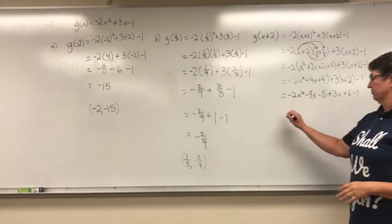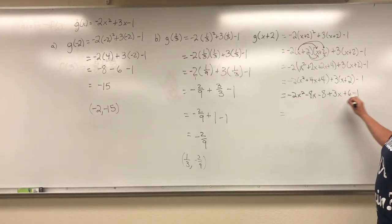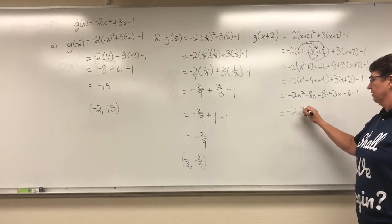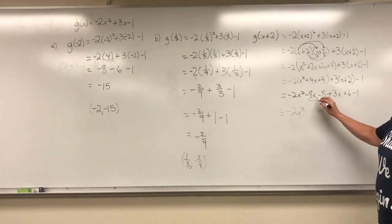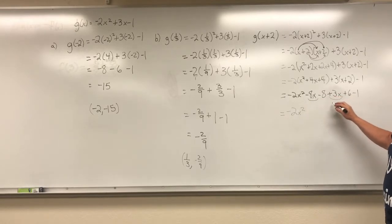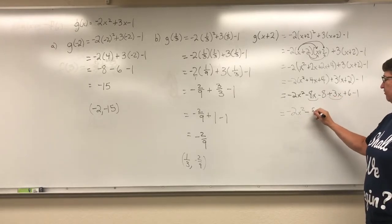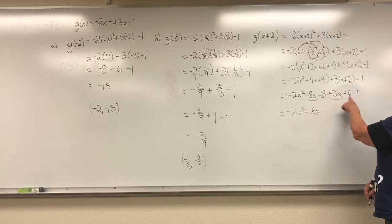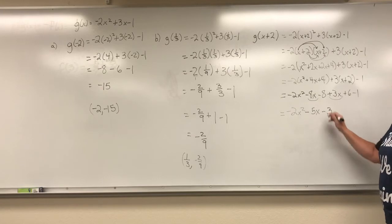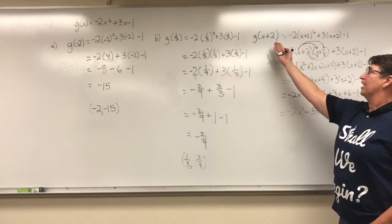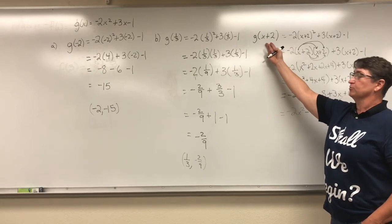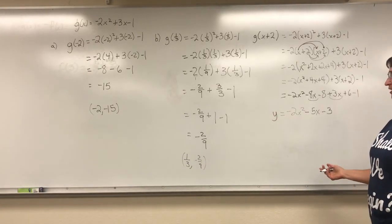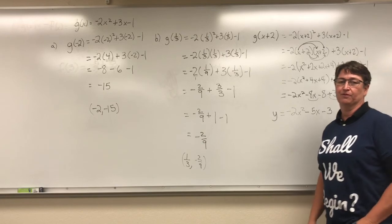Now I just combine all my like terms. There are no other variables with a squared — no more x squared terms to combine. Then here I have negative 8x and positive 3x, so when I add those together I end up with negative 5x. And here I have negative 8 and a 6, which gives me negative 2, minus 1 gives me negative 3. So when I evaluate the quadratic at the algebraic expression x plus 2, I end up with y equal to negative 2x squared minus 5x minus 3. Hope that helps!